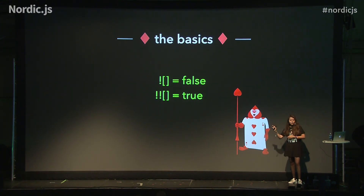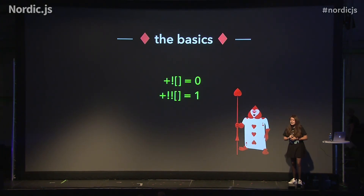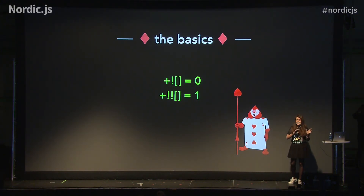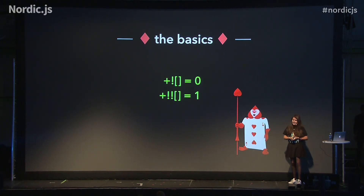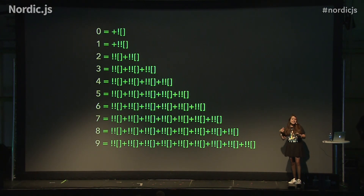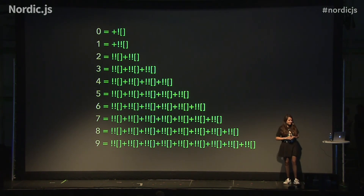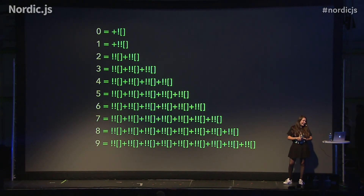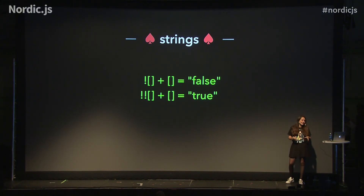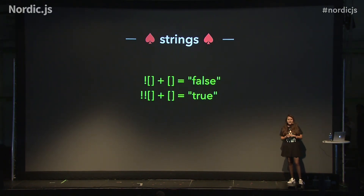Now that we have false and true, we can actually get any number by just adding the unary plus operator, because the actual purpose of the unary plus operator is to convert everything to a number — to cast things to a number. And now that we have 0 and 1, we can create any other number by just adding 1 plus 1 plus 1 until infinity. We can also convert things into strings using the plus operator.